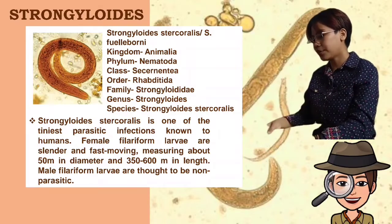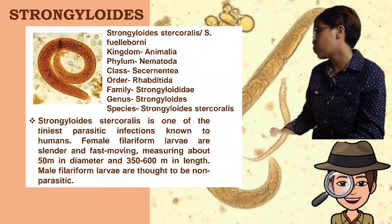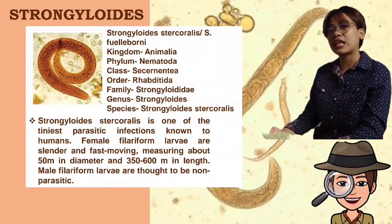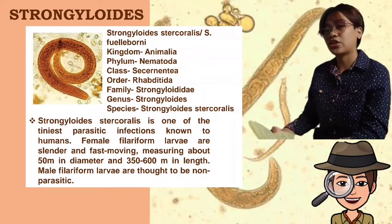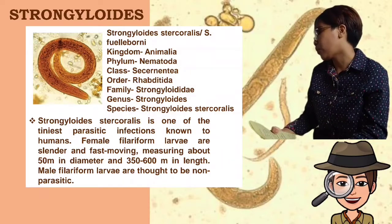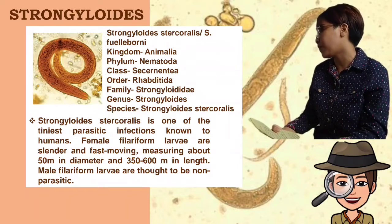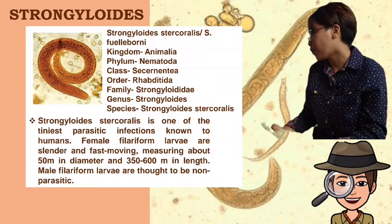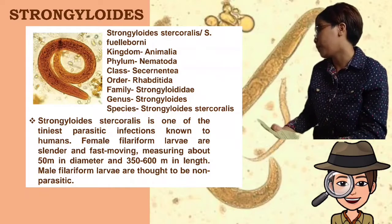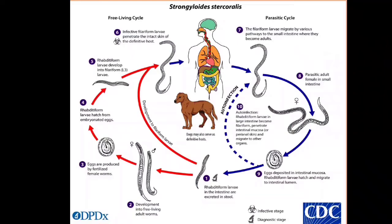For the morphology, Strongyloides stercoralis is one of the tiniest parasitic infections known to humans. Female filariform larvae are slender and fast-moving, measuring about 50 micrometers in diameter and 350 to 600 micrometers in length. Male filariform larvae are thought to be non-parasitic.